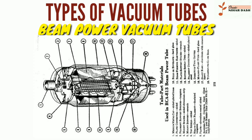The beam power tube is usually a tetrode with the addition of beam-forming electrodes, which take the place of the suppressor grid. These angled plates, not to be confused with the anode, focus the electron stream onto certain spots on the anode which can withstand the heat generated by the impact of massive numbers of electrons, while also providing pentode behavior.